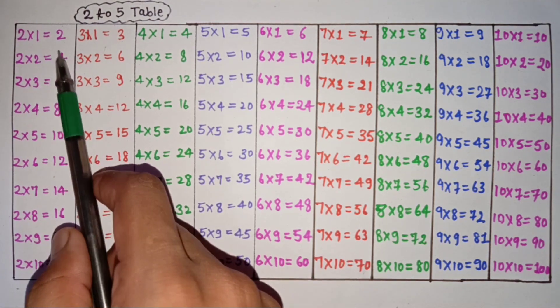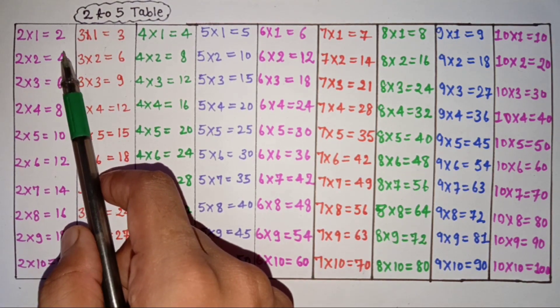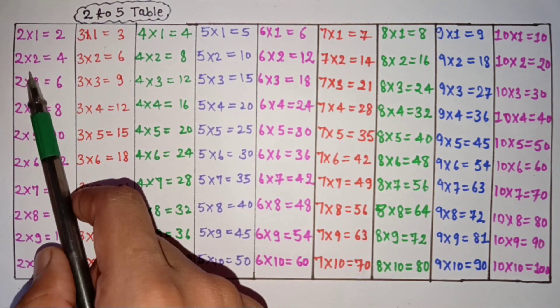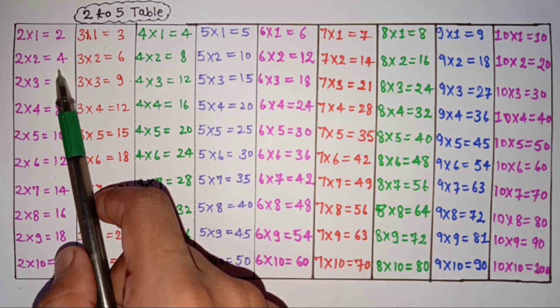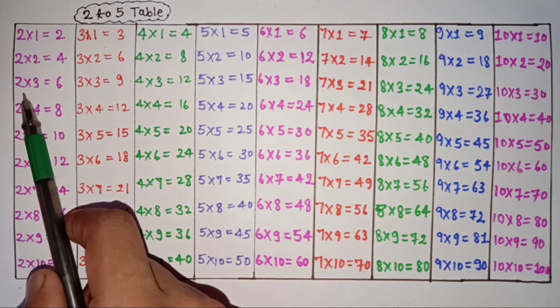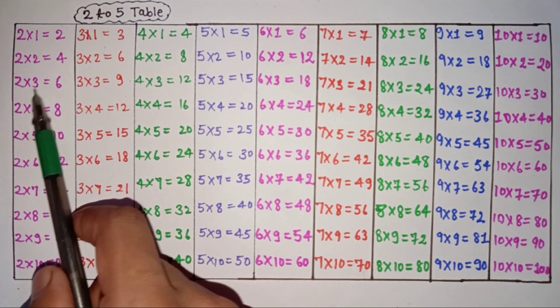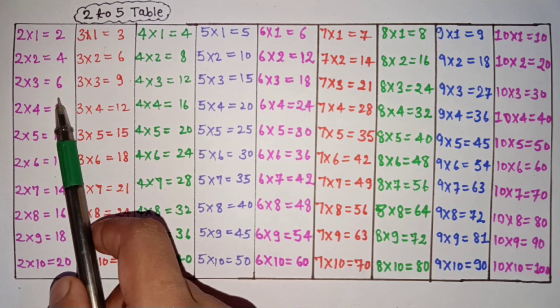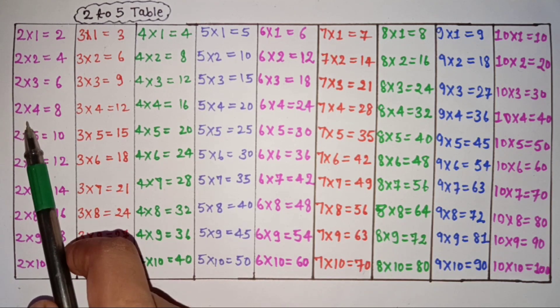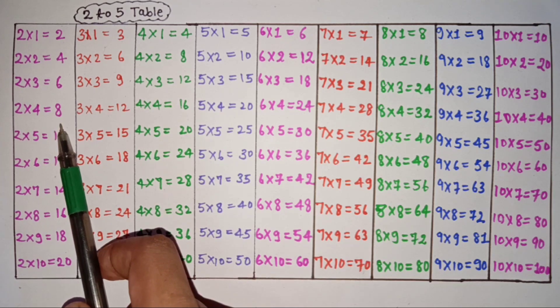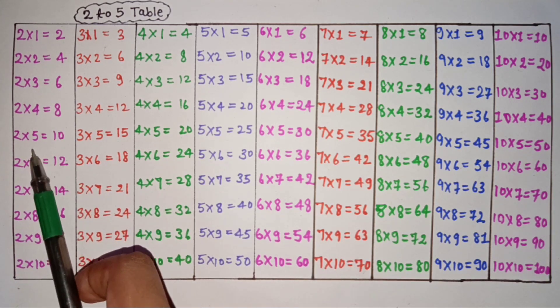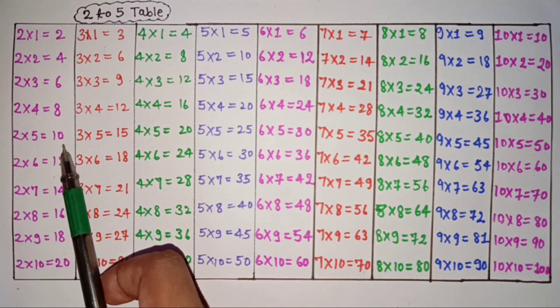2 1's are 2, 2 2's are 4, 2 3's are 6, 2 4's are 8, 2 5's are 10.